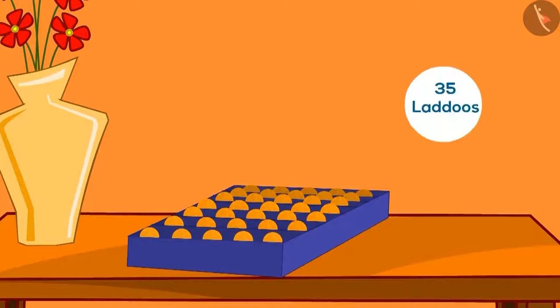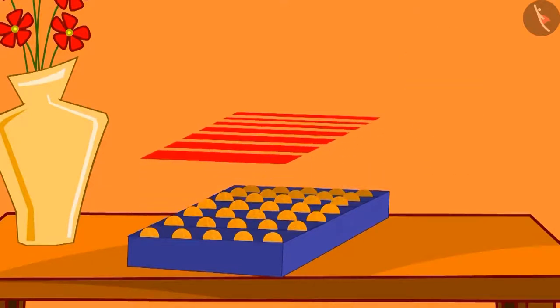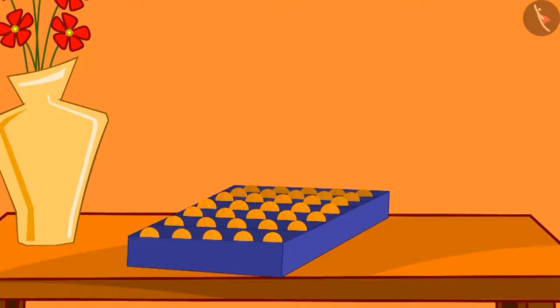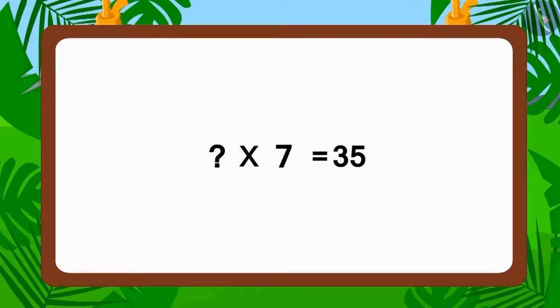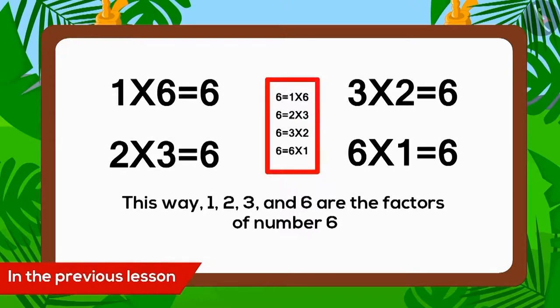The box contained a total of thirty-five ladoos. There were seven vertical slots in the box. Can you tell how many ladoos were there in each vertical slot? This question can be written in multiplication form like this. Now, can you make use of the method of finding factors learned in the last lesson?